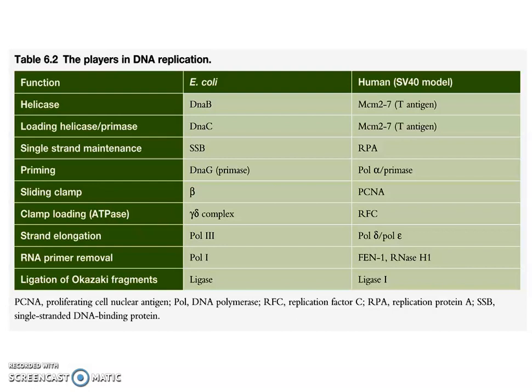There is also a clamp — a ring-shaped structure placed during DNA replication into which DNA polymerase, helicase, and primase are all loaded. The sliding clamp in E. coli is beta; the clamp loader is the delta-gamma complex. For strand elongation, once priming is complete, DNA nucleotides are elongated by DNA polymerase 3. The RNA primer is then removed by DNA polymerase 1, and finally all the Okazaki fragments are joined by DNA ligase.